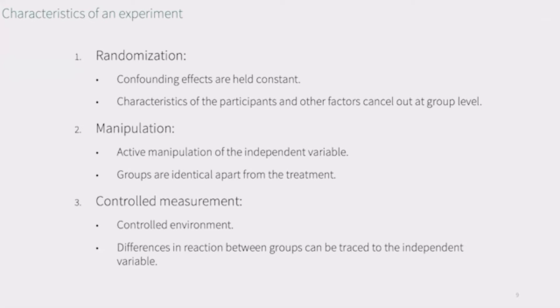In the end, we will compare the results between both groups and any difference we can then attribute to the stimulus. The first important characteristic of experiments is randomization. By randomly assigning the participants to one of the treatment or groups, we can make sure that confounding effects are held constant and will be the same for both groups. Also, individual characteristics of participants and other factors that we cannot control will cancel out at the group level when participants are randomized.